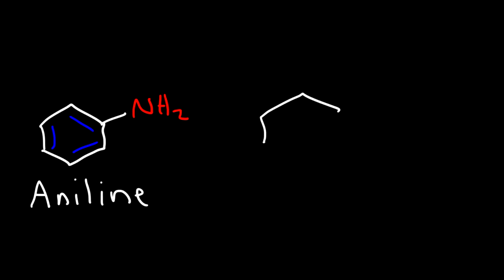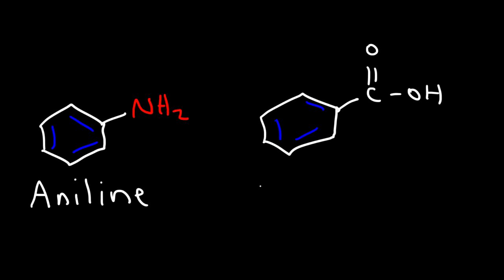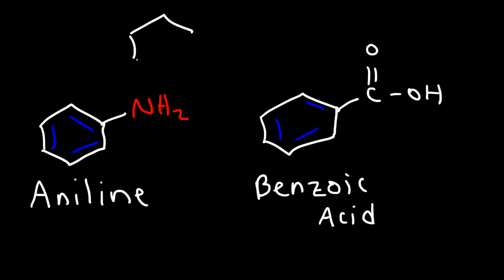This one I'm sure you've seen before. If we have a benzene ring with a carboxylic acid group, this is called benzoic acid. You may also see the COOH group written out — it's the same thing, this is also benzoic acid.